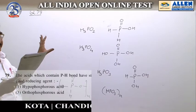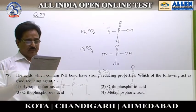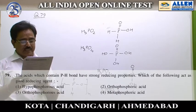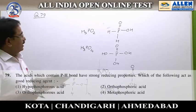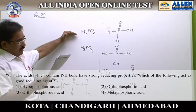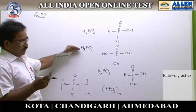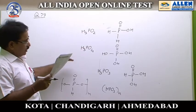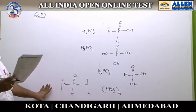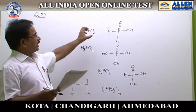Question number 79: The acid which contains a P-H bond acts as a strong reducing agent. Which of the following acts as a good reducing agent? The acids given are hypophosphorus acid, orthophosphoric acid, orthophosphorus acid, and metaphosphoric acid. The hydrogen atom which is directly bonded with the central phosphorus atom acts as a reducing agent.